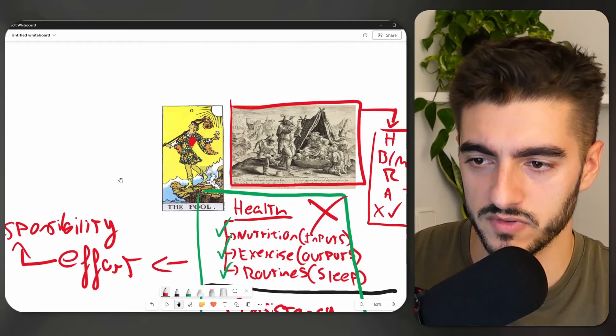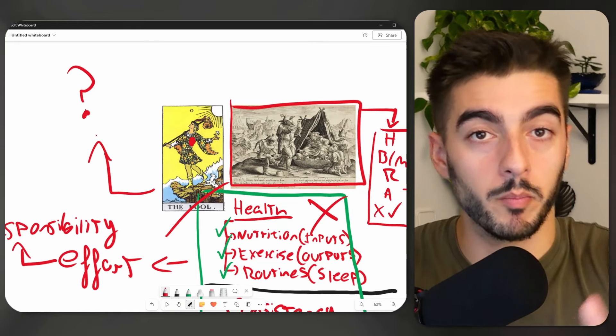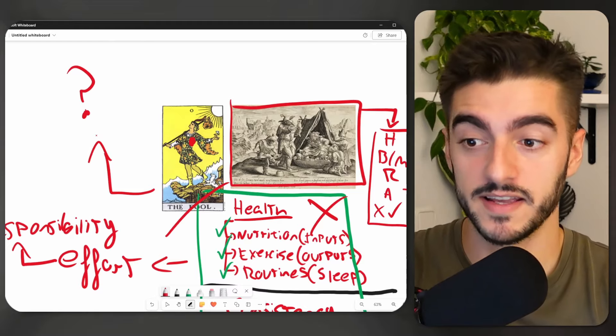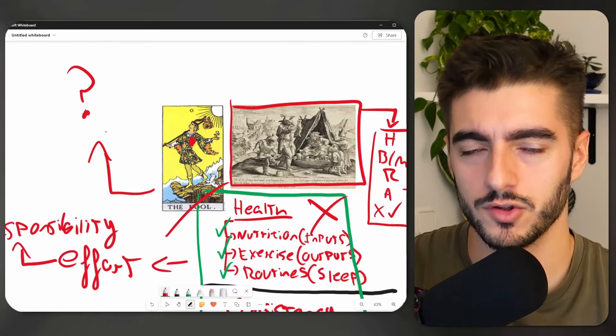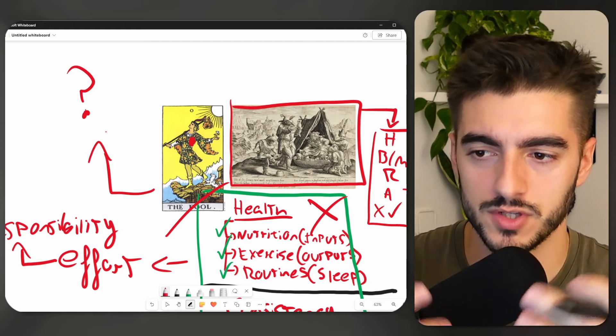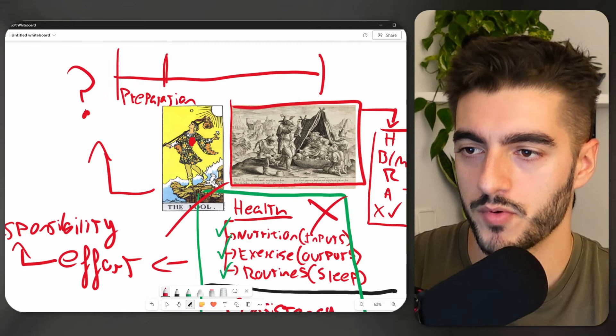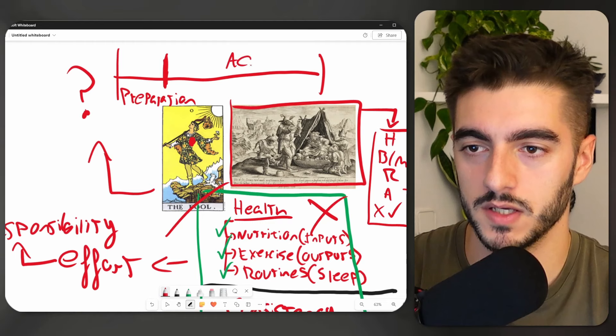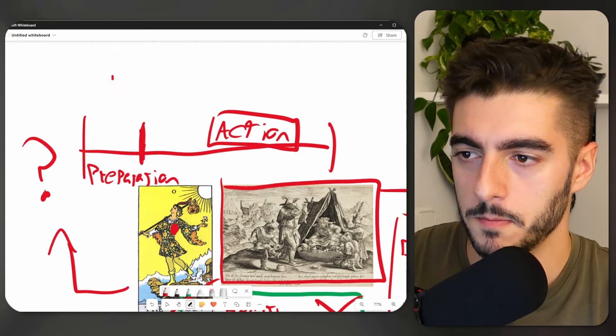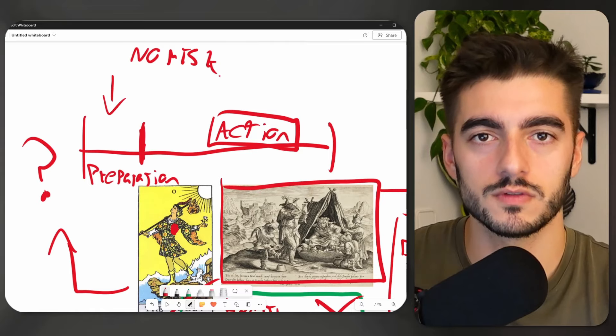So instead, what people do is fool themselves into thinking that the truth is something else so that they can push away this responsibility. And then they blame it on something external or that they don't have the right information yet or that they have to wait for something to happen. And what they're doing is they're just extending this preparation phase right here at the beginning, instead of going into the action phase, because this phase is very comfortable, there's literally no risk, and you cannot lose if you're not playing.